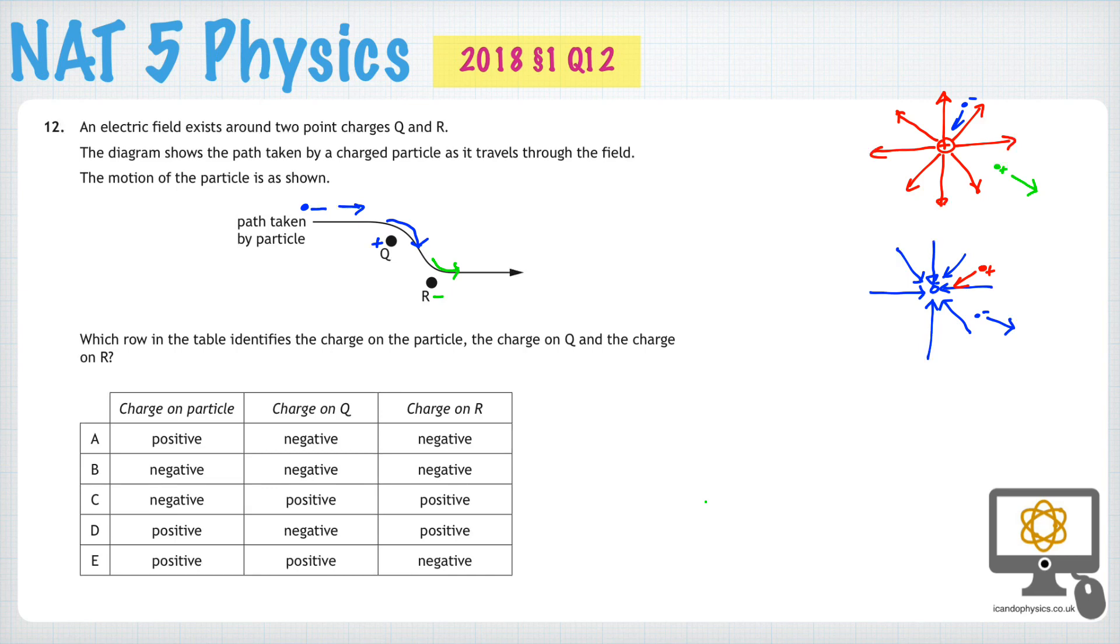C has the charged particle is negative, but the rest aren't correct either. So that cannot be a possibility. Let's rub all of that out and have another look.